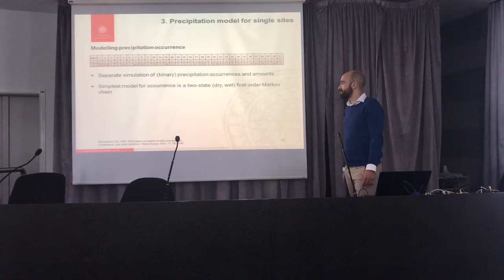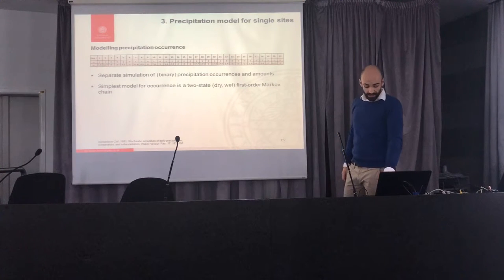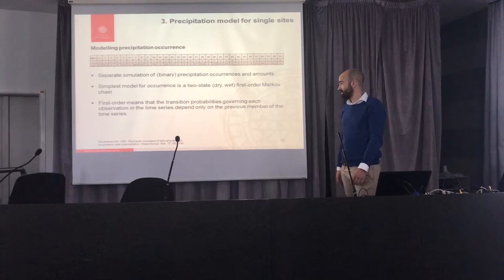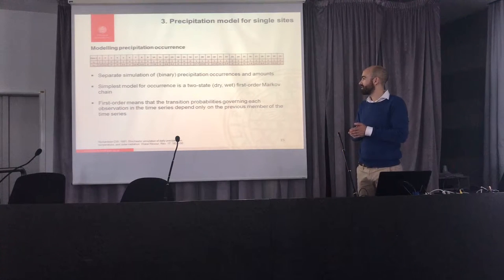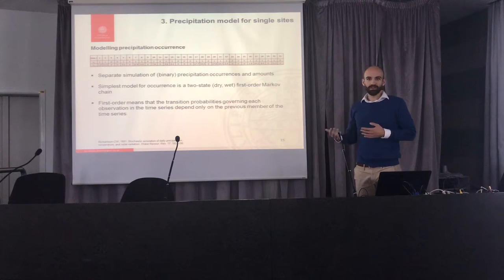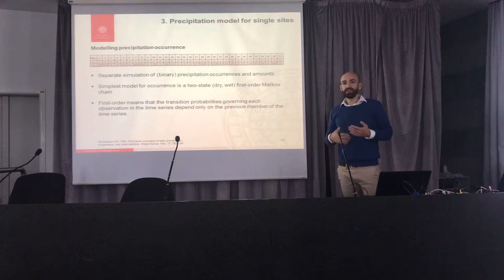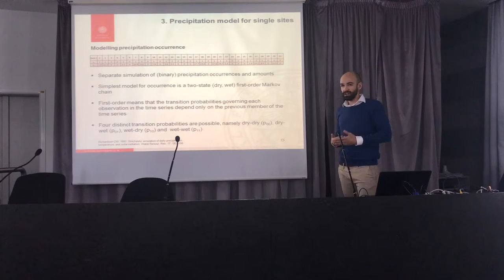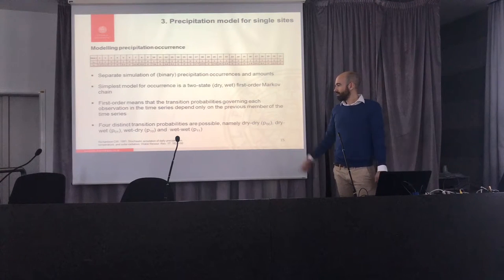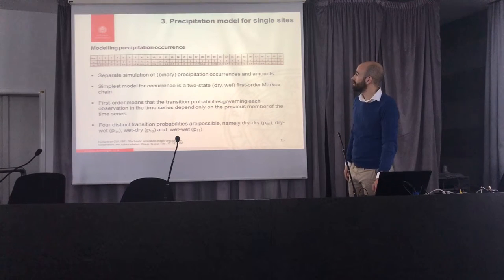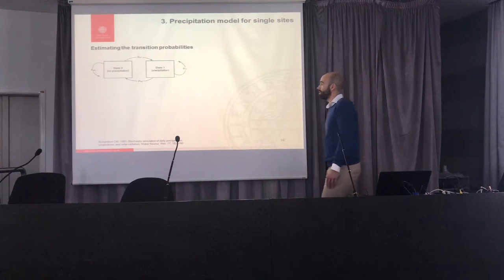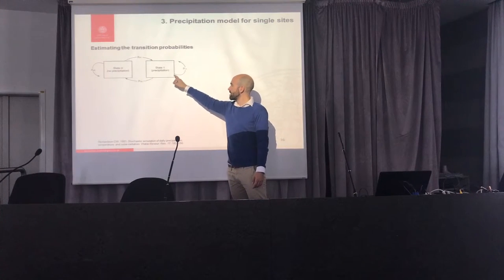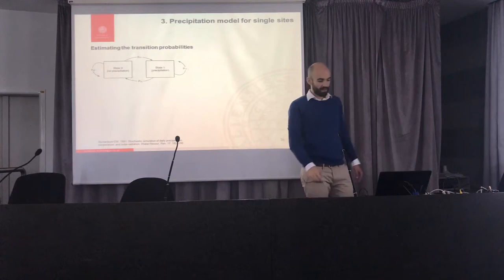First-order means the transition probabilities between the different states only depend on the previous member of the time series. You could also extend to the previous two, three, or four days, though there's always a risk of over-parameterizing the model. In the end you have four distinct transition probabilities: dry-to-dry, dry-to-wet, wet-to-dry, and wet-to-wet. For such a model you only have to derive two parameters because they sum up to one. You just feed the model with uniformly distributed random numbers to generate long sequences.